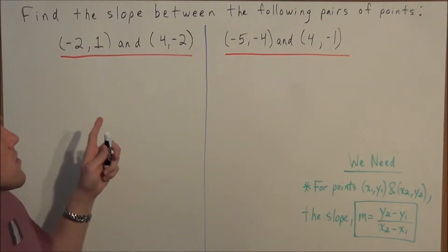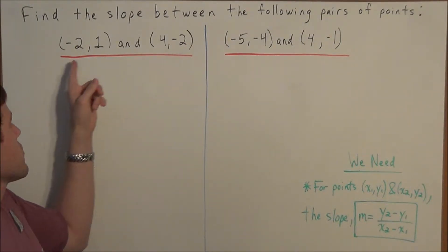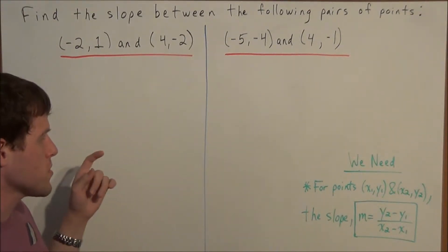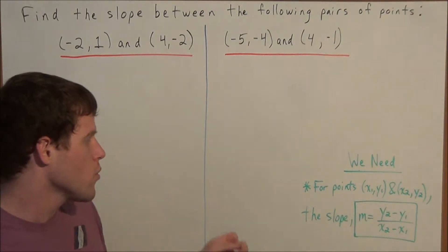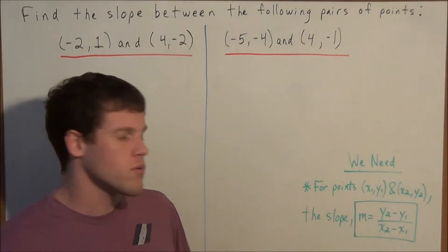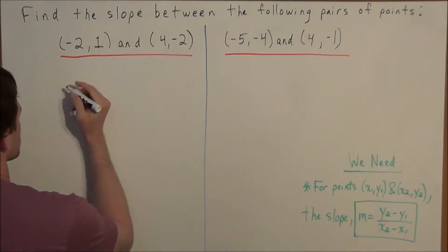We have find the slope between the following pairs of points and let's start with negative two, one and four, negative two. So to find the slope between any pair of points, x1, y1 and x2, y2, we could use the equation m equals y2 minus y1 over x2 minus x1.